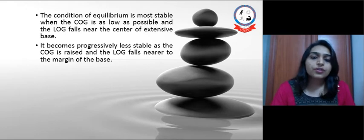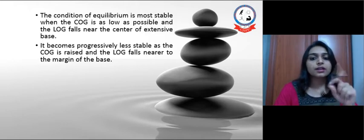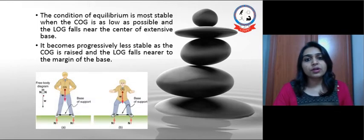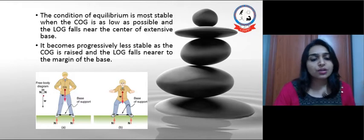The condition of equilibrium is more stable when the COG is as low as possible and LOG falls near the center of the extensive base of support. It becomes progressively less stable as the COG rises and LOG falls nearer to the margin of the base.